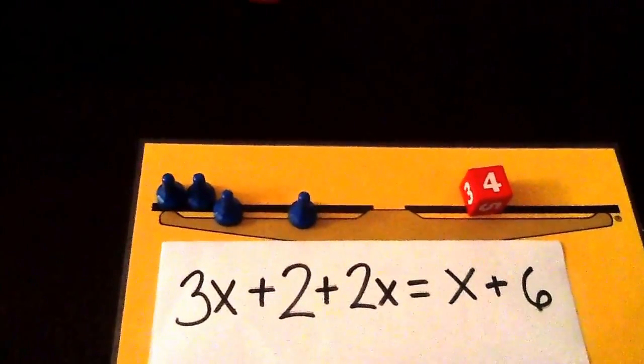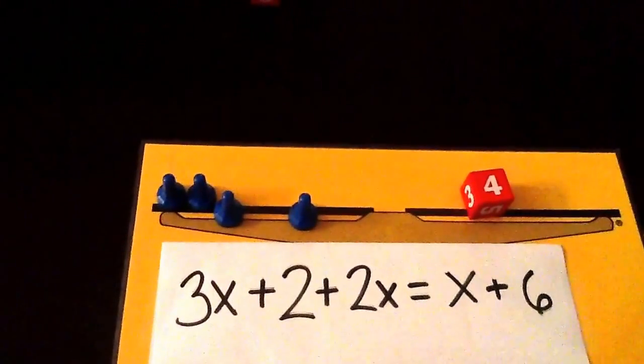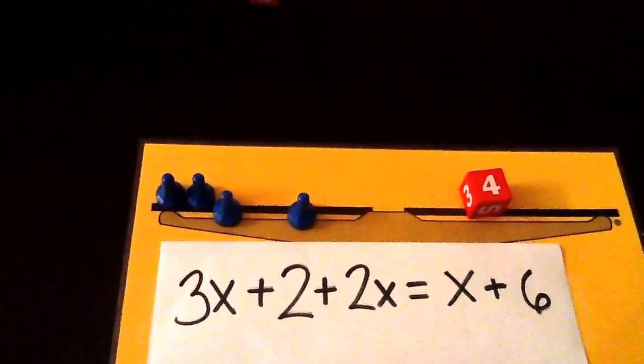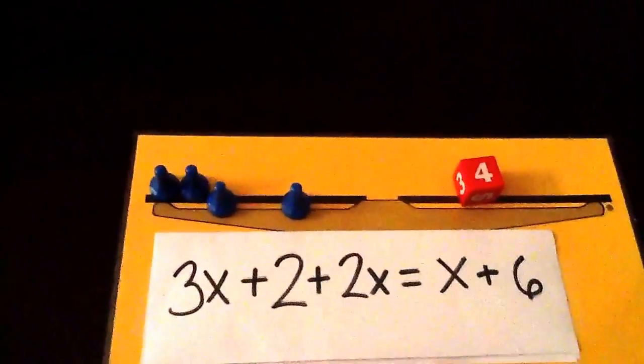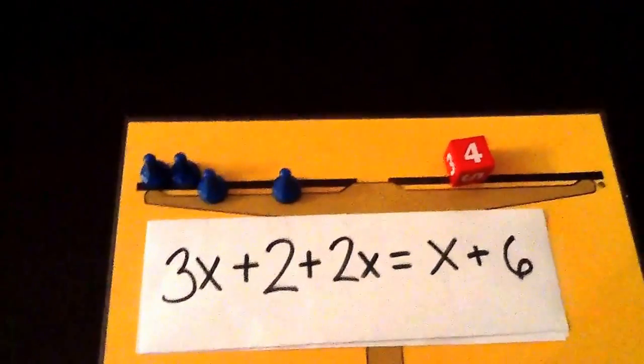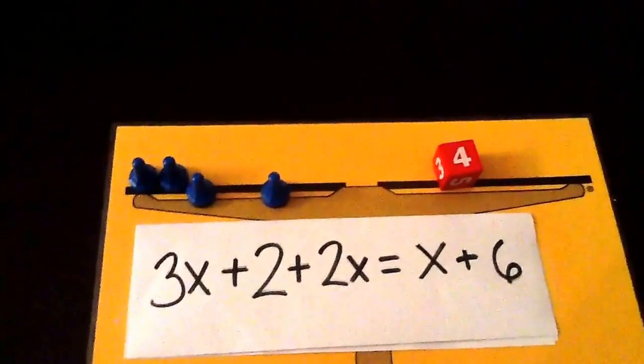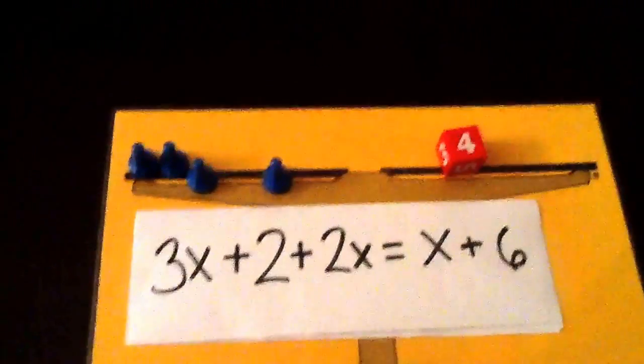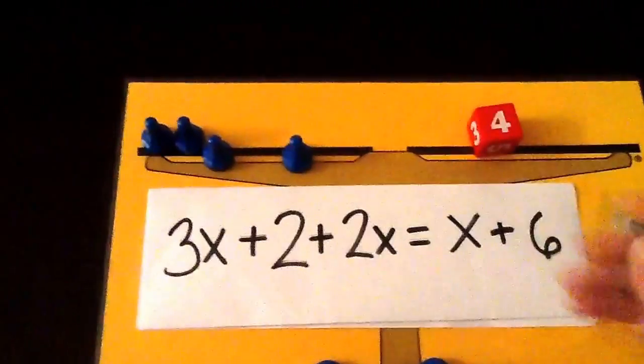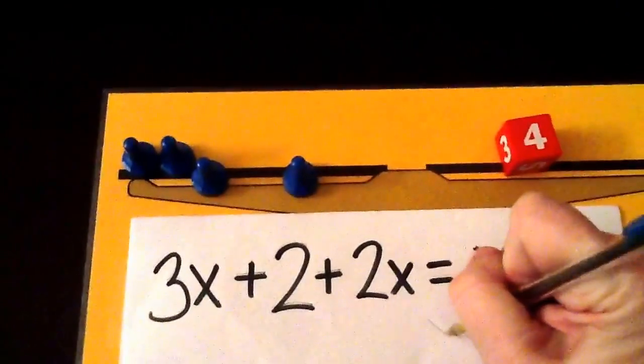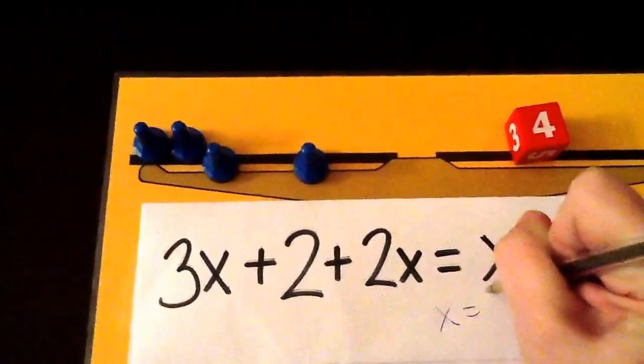So now we're ready to go ahead and solve for the variable. We have 4 pawns or 4x's equals 4, which means that 1x is equal to 1. And so we'll go ahead and write x equals 1.